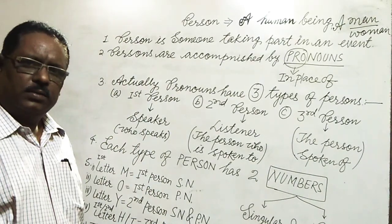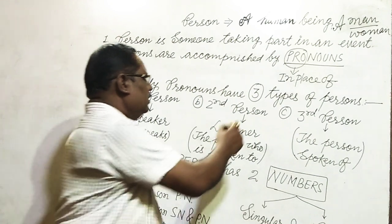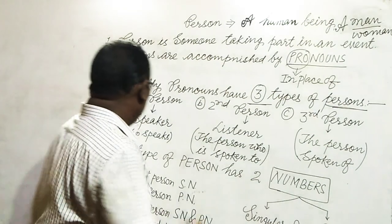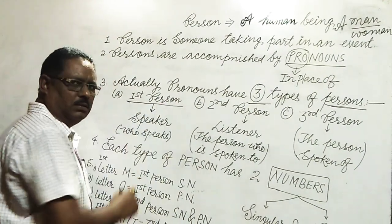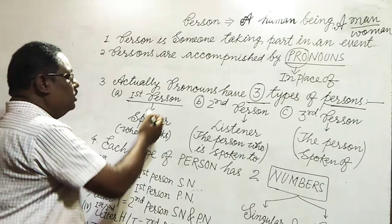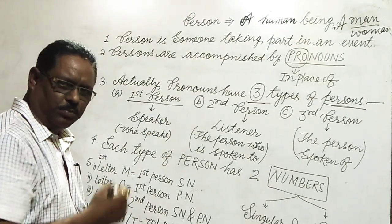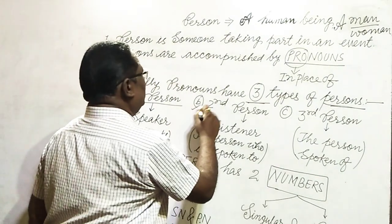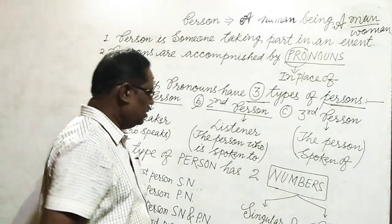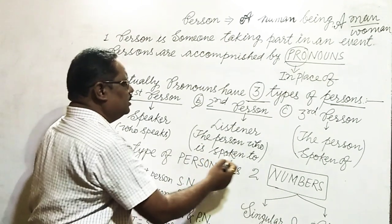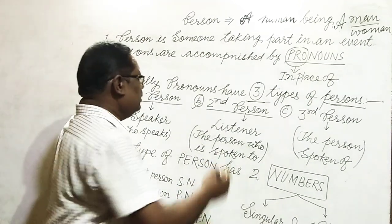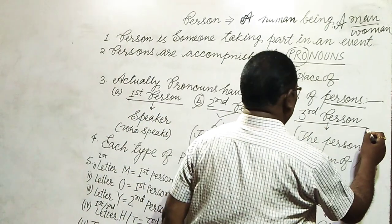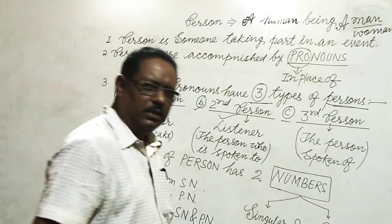Pronouns have three types of persons. First person: one who speaks is first person — the speaker is first person. Second person: the person who is spoken to — the listener is the second person. And third person: the person spoken about.